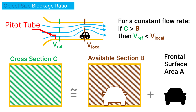When you place an object inside the test section, you partially block the cross section through which the air can flow. This means that it will locally need to speed up compared to the reference velocity of the wind tunnel, which is typically set and measured at the undisturbed beginning of the test section. So if you set a tunnel to 10 meters per second, the flow might be going at 11 meters per second around your object.